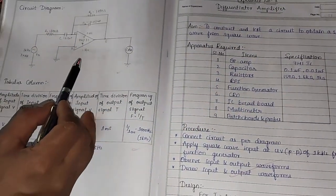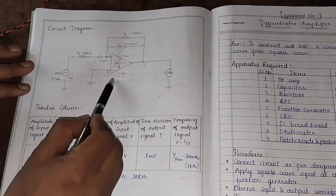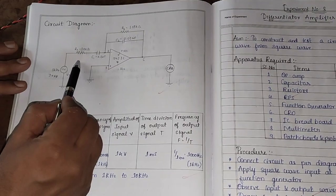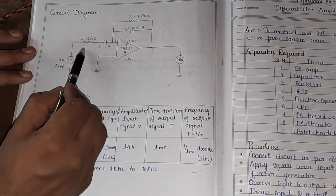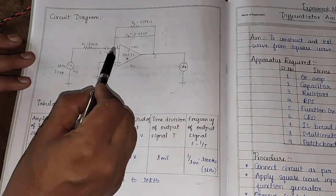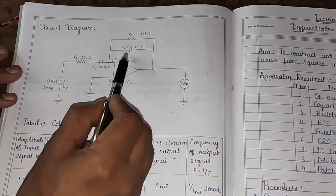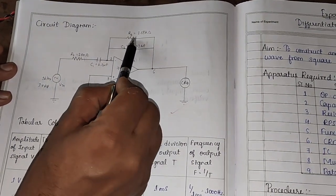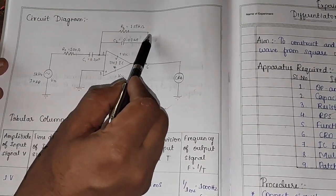This is the circuit diagram of the differentiator. It consists of op-amp IC741. At the input, we have connected a capacitor and a resistor in series. And in the feedback, we have connected a capacitor of value 0.01 microfarad, and a feedback resistor of value 1.59 kilo ohm.